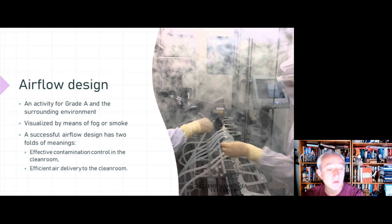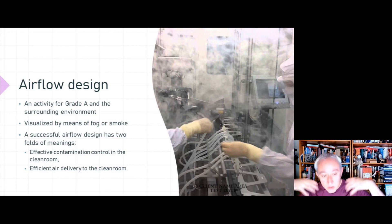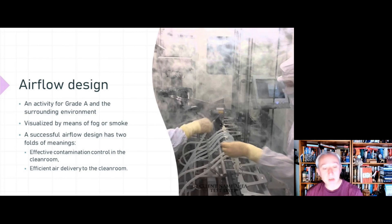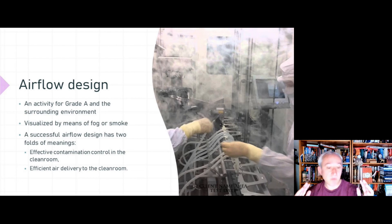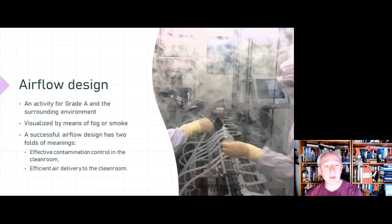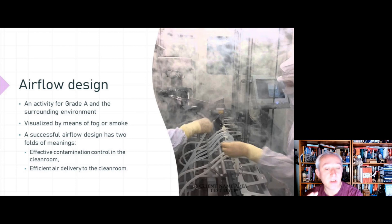To maintain effective contamination control for a particular clean room, we want to have a large quantity of air flowing in a direction that helps to maintain contamination control. Within Grade A or ISO class 5, that's a unidirectional airflow, so this feeds into the previous video.